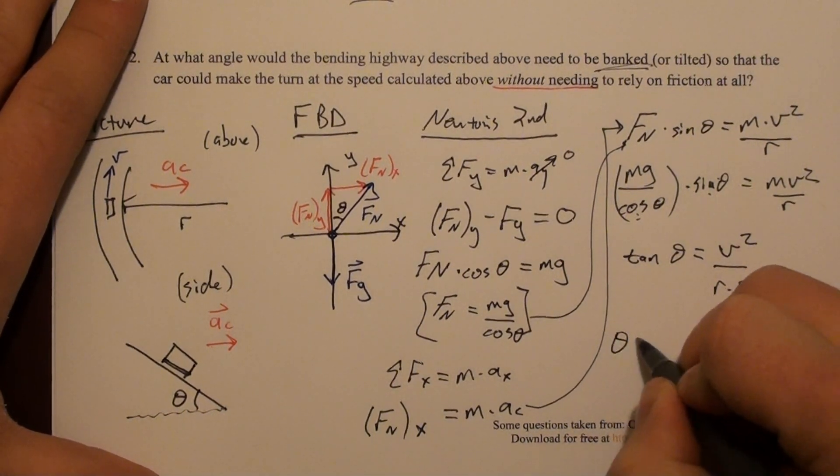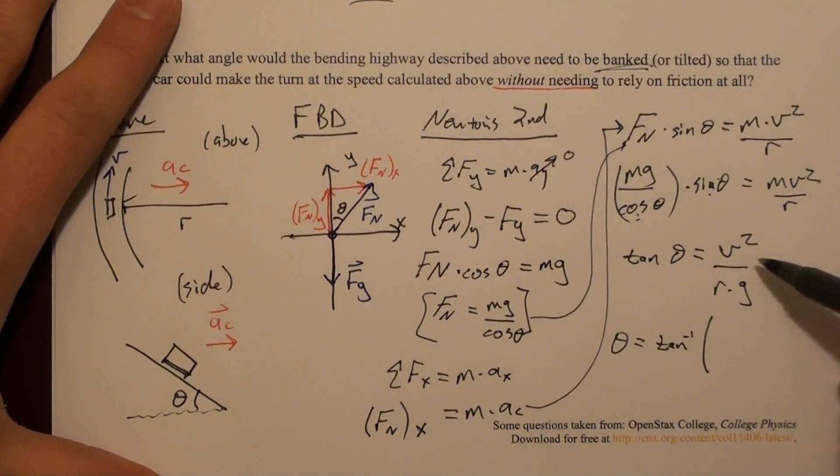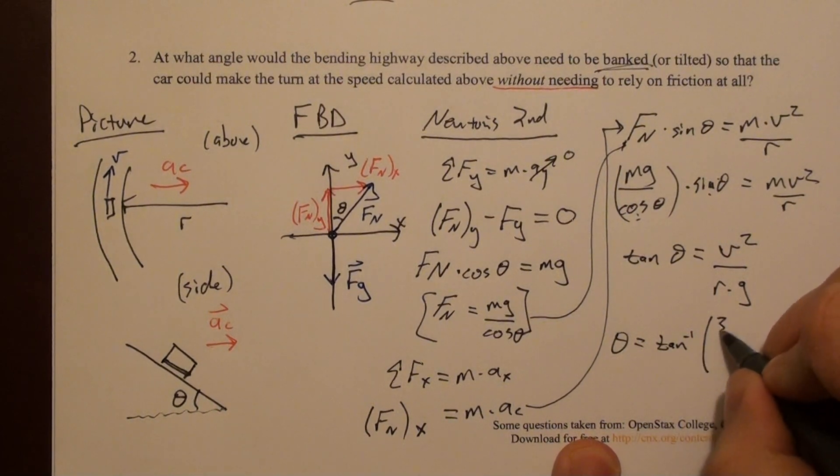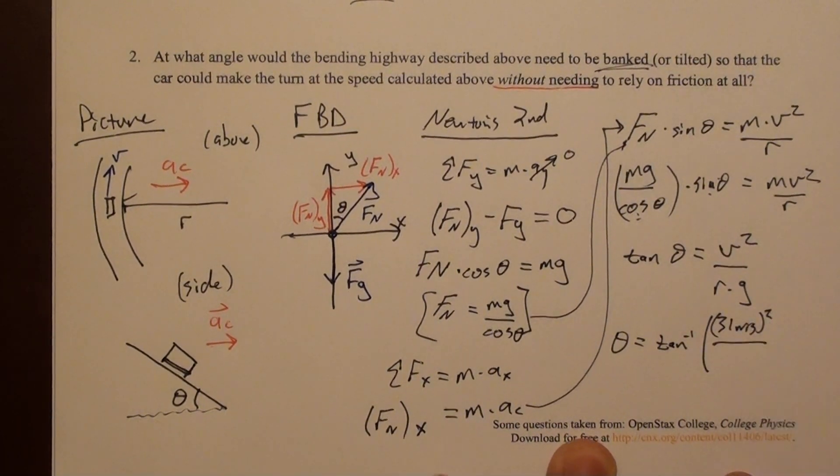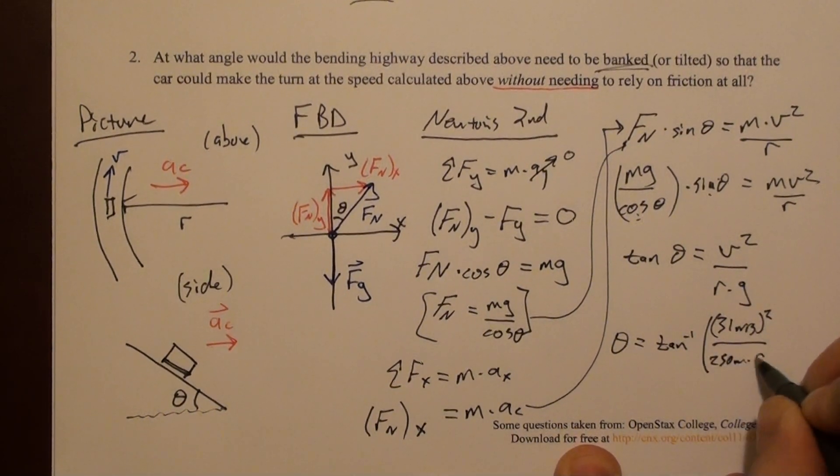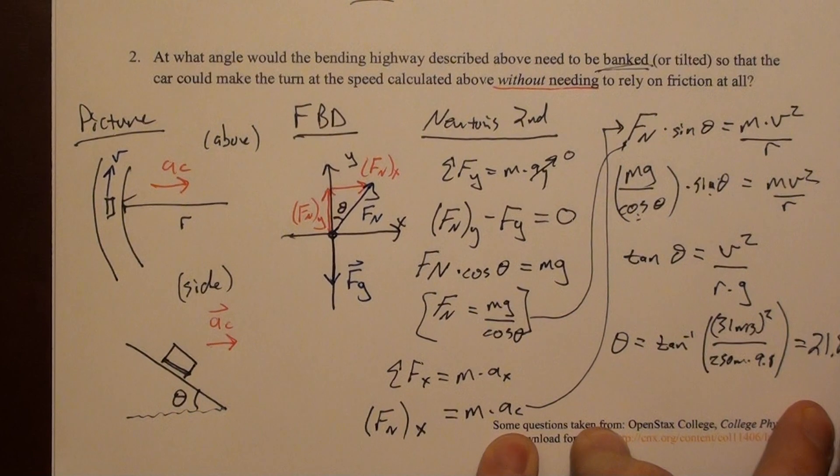I can now solve for θ. Theta is the arctangent of v² over rg. I'm going to plug that in. I'm asked to use the v from the previous problem, so that's 31² divided by 250 meters times 9.8. If you do all that, what you come up with is 21.8 degrees. There you have it.